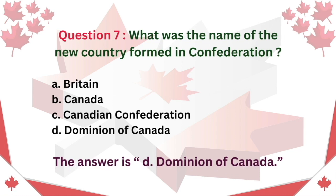Question 155: What was the name of the new country formed in Confederation? A. Britain. B. Canada. C. Canadian Confederation. D. Dominion of Canada. The answer is D. Dominion of Canada.